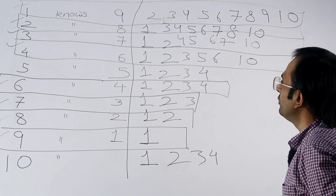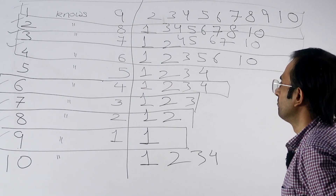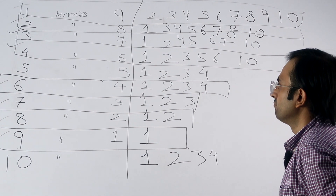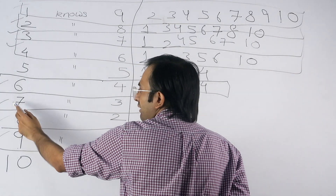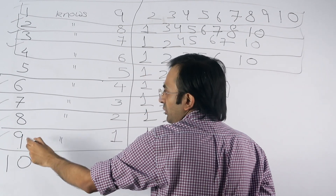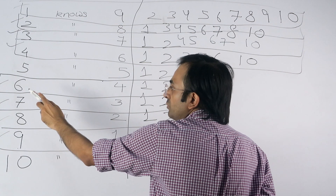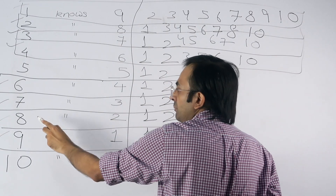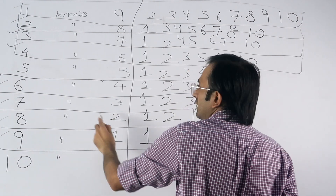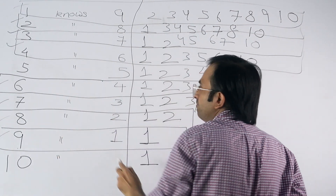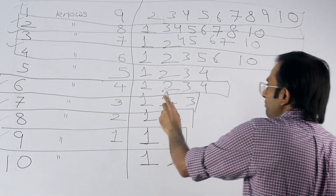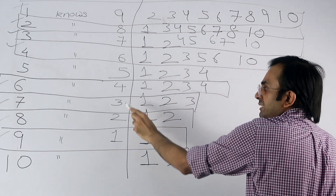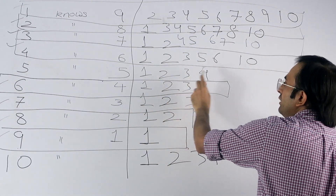Person five knows five people, which means he does not know four people. We already know who those four people are: six, seven, eight, and nine. Because we found out all the people whom six knows, all the people whom seven knows, all the people whom eight knows, and all the people whom nine knows — and none of these four people know five. So five knows: one, two, three, four, and ten.